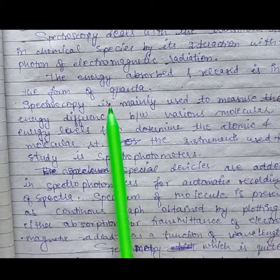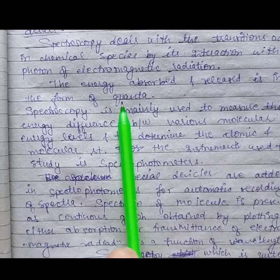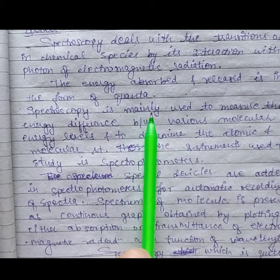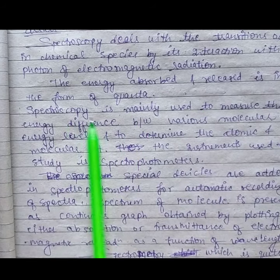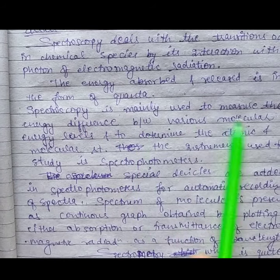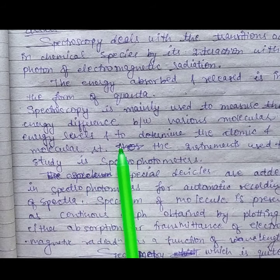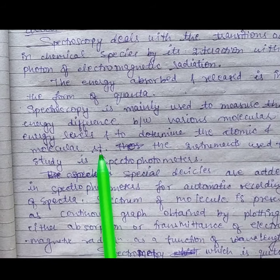The energy absorbed and released is in the form of quantum. Spectroscopy is mainly used to measure the energy difference between various molecular energy levels and to determine the atomic and molecular structure.